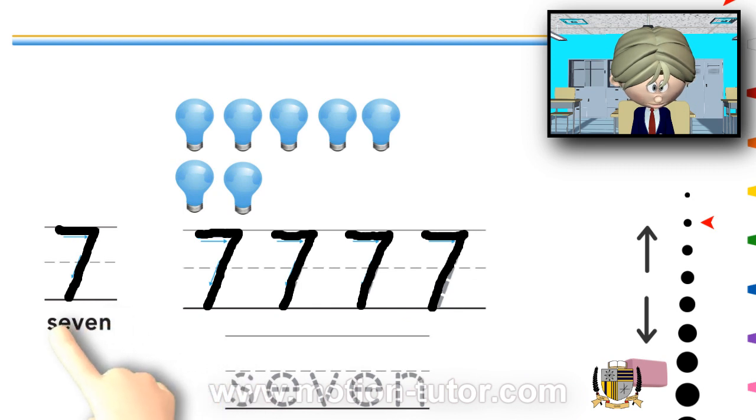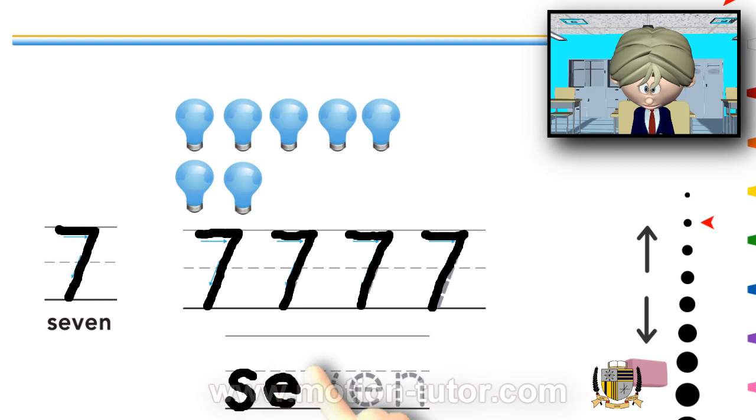And now, to spell 7, it's S-E-V-E-N. So, let's write it. S-E-V-E-N. S-E-V-E-N. And that's 7.